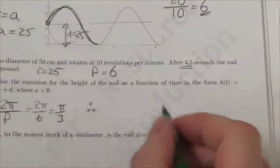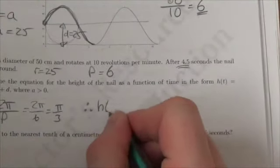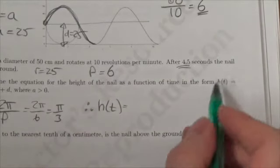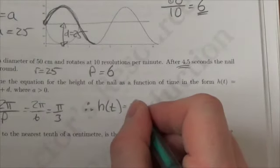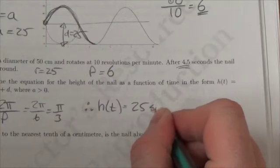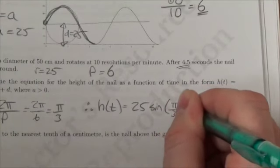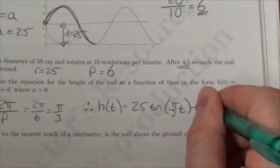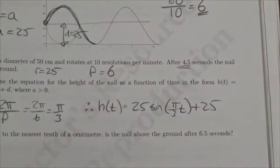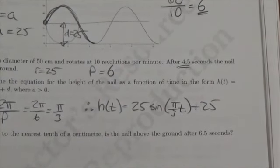And so therefore, I can write this equation as h of t. That's the notation they're using, is 25, that's the a value, times the sine of pi over 3 times t plus 25. And there you go. That's the equation of the motion of this graph.